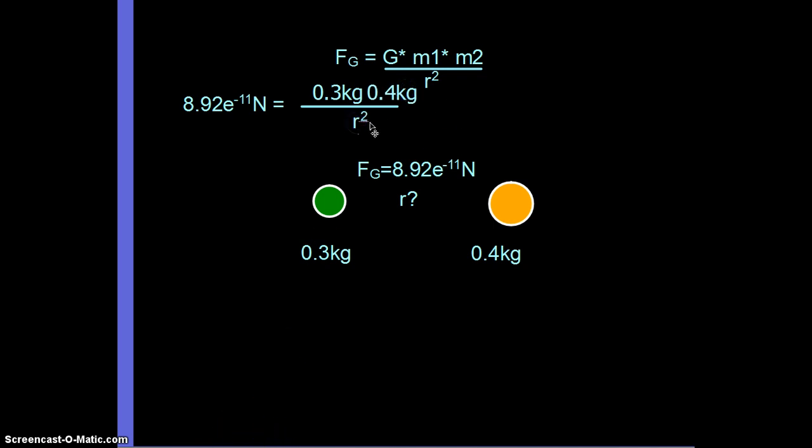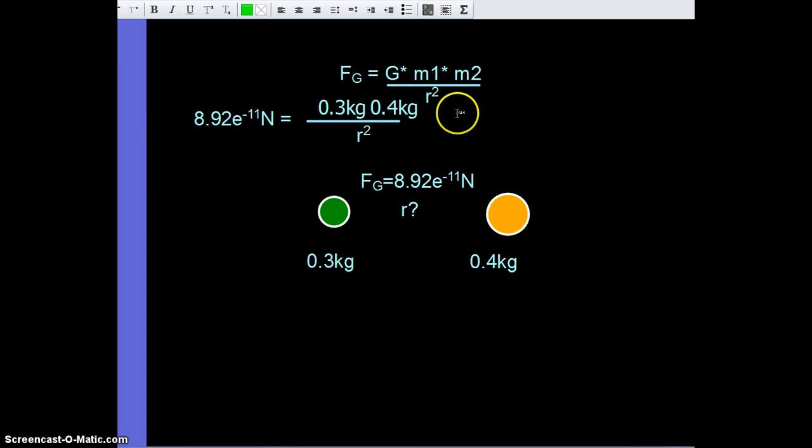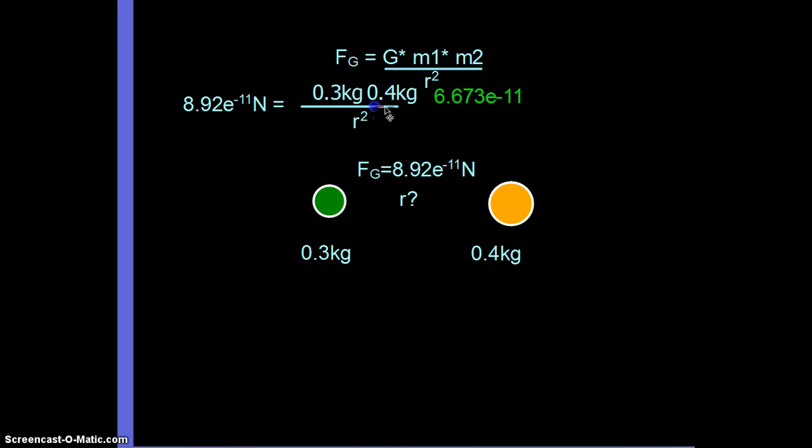or R squared times 6.673 times 10 to the negative 11th newtons. And what you do here is then, to solve, we would have to multiply the radius squared over, divide by the force, and then we'd have to square root both sides, and we'd come up with an answer. And I believe the answer in the book is 0.3 meters.